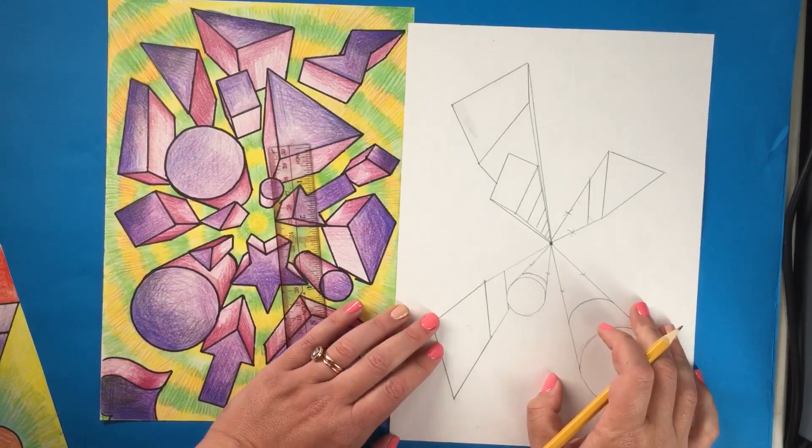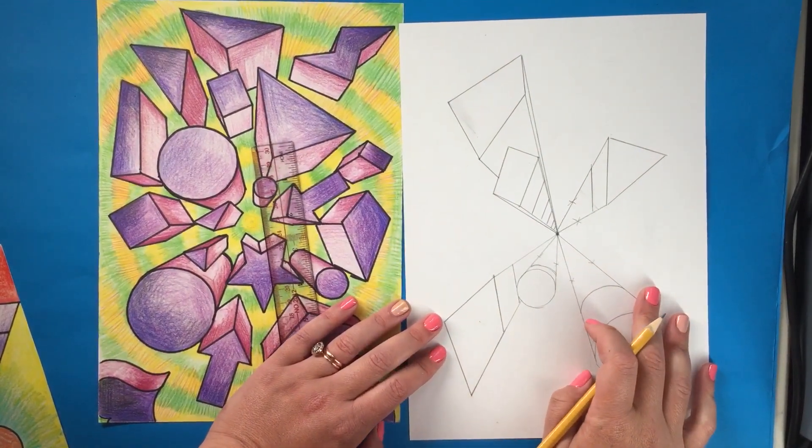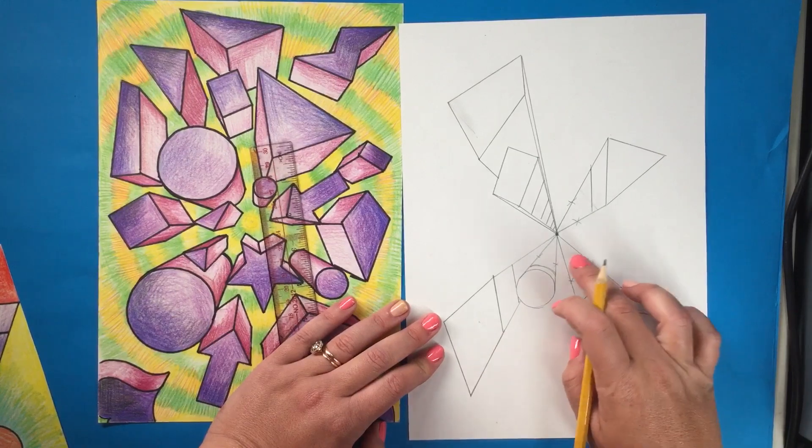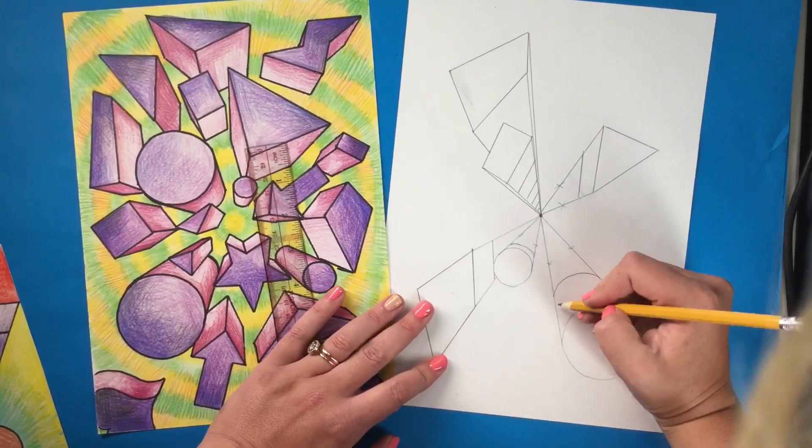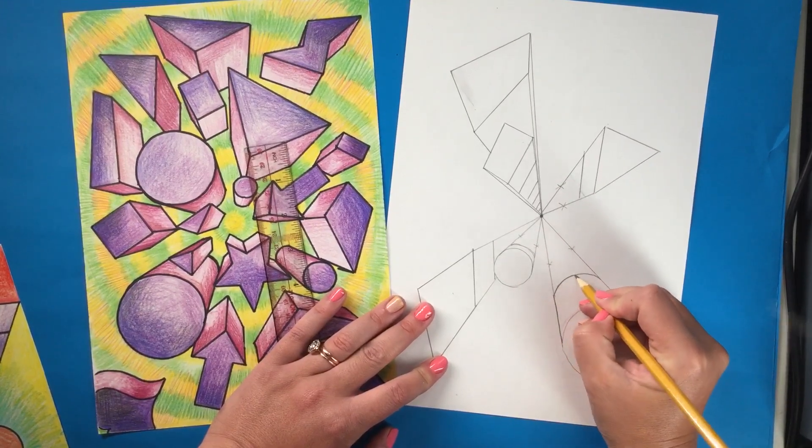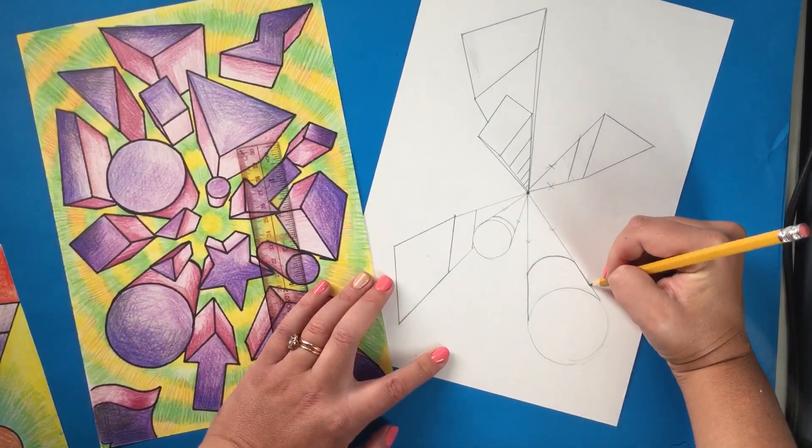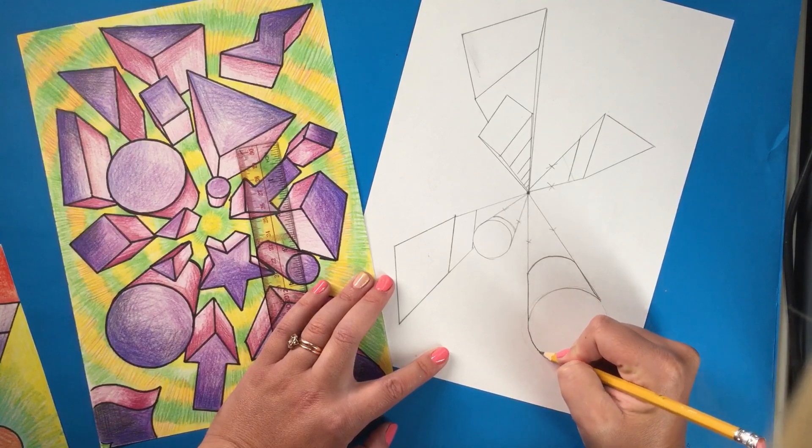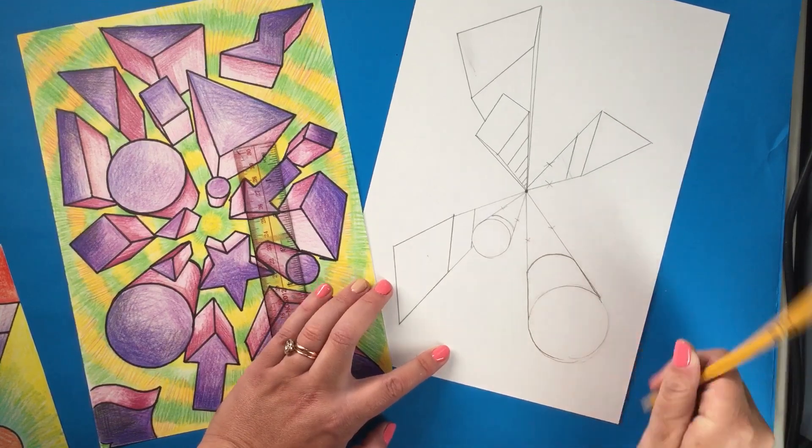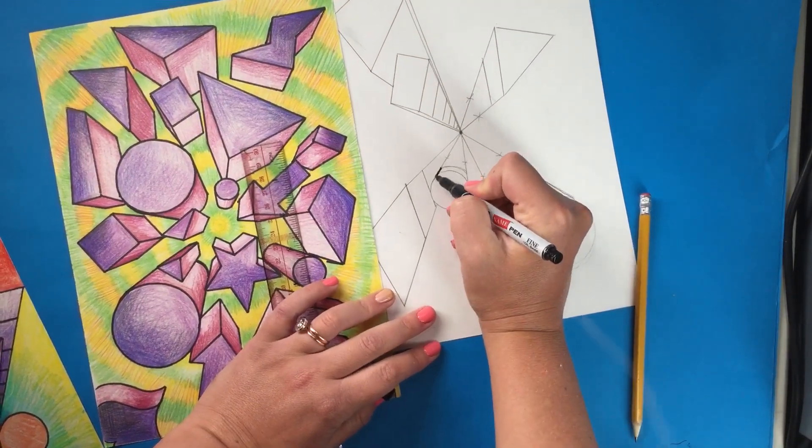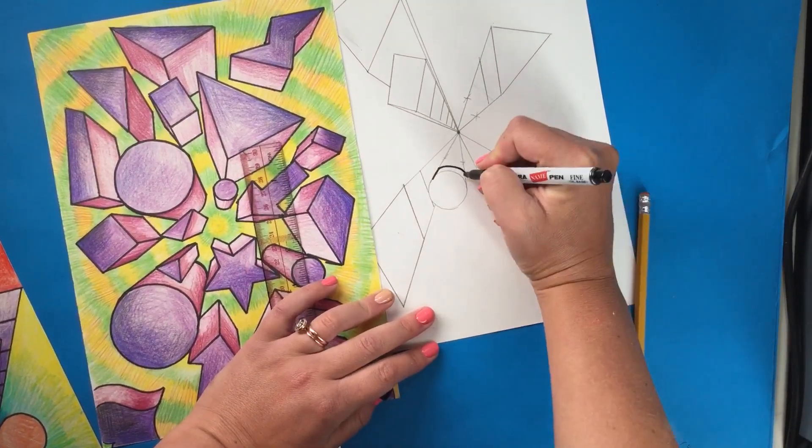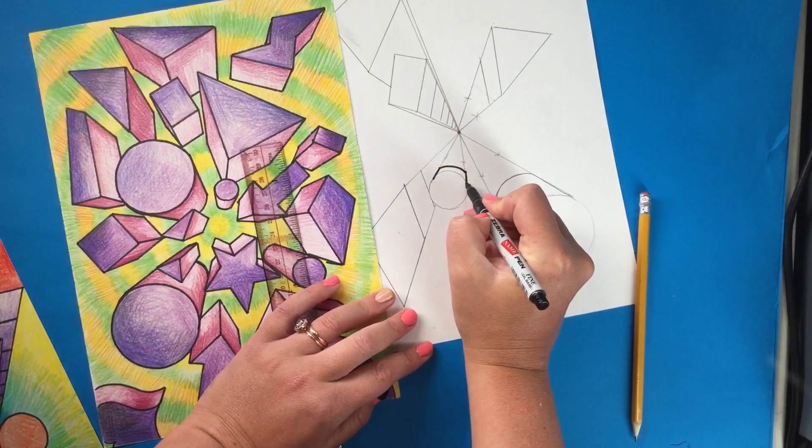So that will be your last thing that you need to do as far as drawing goes is erase all of those perspective lines so that you're left with just the floating shape, just this part and the shape that you drew to begin with. If you want, you can take a marker and outline those lines to make them a little bit more clear.